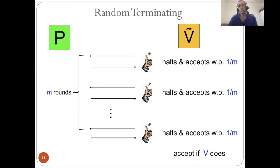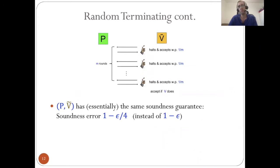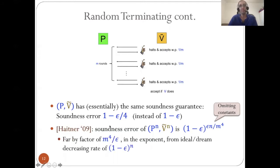This looks like a very counterproductive thing to do because the prover now has a better chance to win. If we start with an argument with a very weak soundness guarantee, say soundness error 1 minus epsilon, then the soundness of this random terminating variant is essentially the same. But what's interesting is that no matter what argument you started from, if you look at the random terminating variant and repeat it in parallel, then Heidner showed that the soundness error actually reduces by an exponential rate.